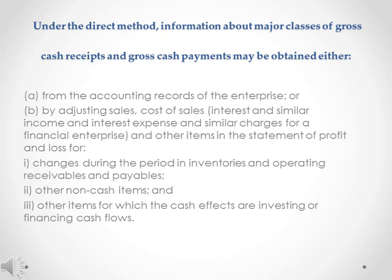Under the direct method, information about major classes of gross cash receipts and gross cash payments may be obtained either: A. From the accounting records of the enterprise; or B. By adjusting sales, cost of sales, interest and similar income, and interest expense and similar charges for a financial enterprise, and other items in the statement of profit and loss for: (1) changes during the period in inventories and operating receivables and payables; (2) other non-cash items; and (3) other items for which the cash effects are investing or financing cash flows.